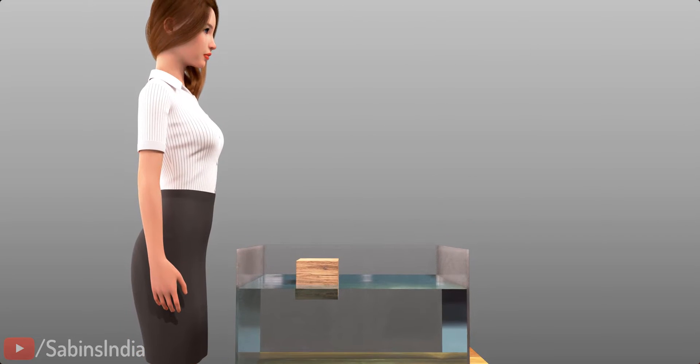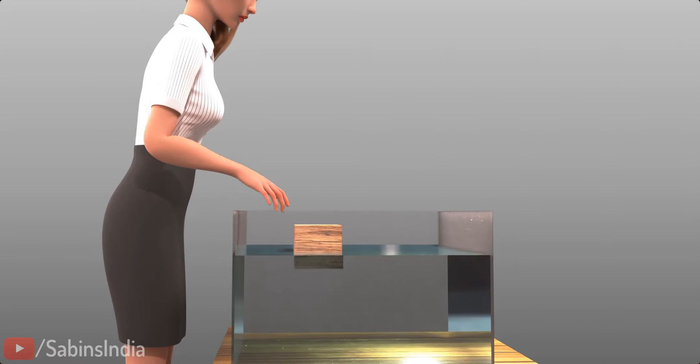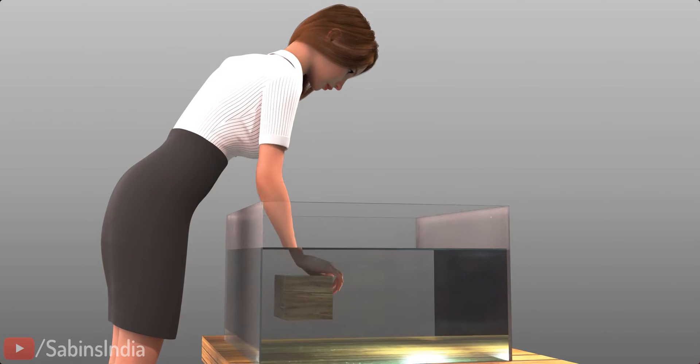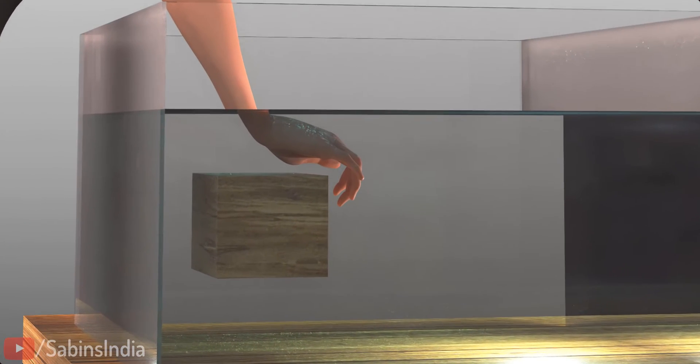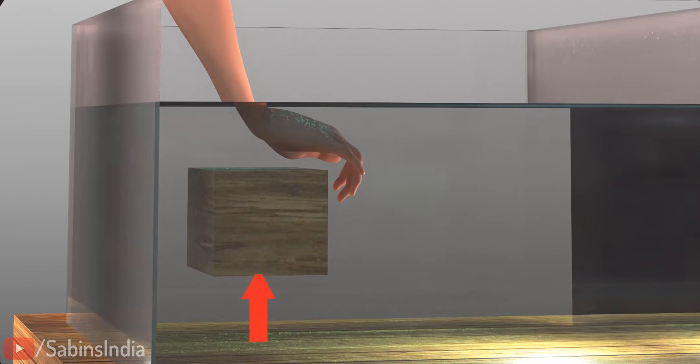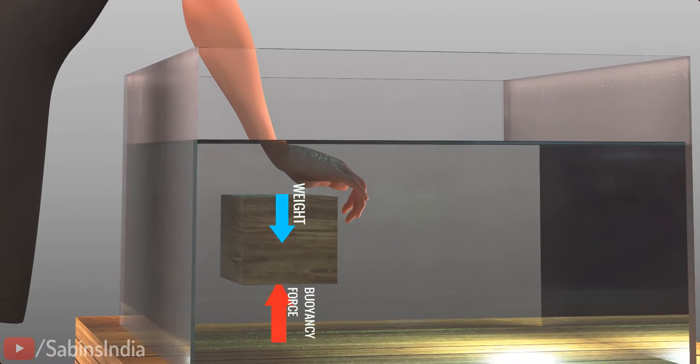Why can't the wood block stay under the water, where you left it? Let's freeze here and analyze the block at the exact moment the woman releases it. The block can't stay in place because the surrounding fluid exerts a force on the wood block, which is more than its weight. This force is known as buoyancy force.